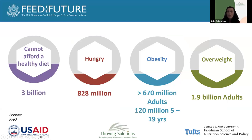Why is this important? Because currently 3 billion people cannot afford a healthy diet. We have 828 million hungry people who have gone 24 hours without a meal and do not know where their next meal is coming from. At the same time, we have 1.9 billion adults who are overweight, of which 670 million adults are obese — with many health implications in terms of non-communicable diseases.